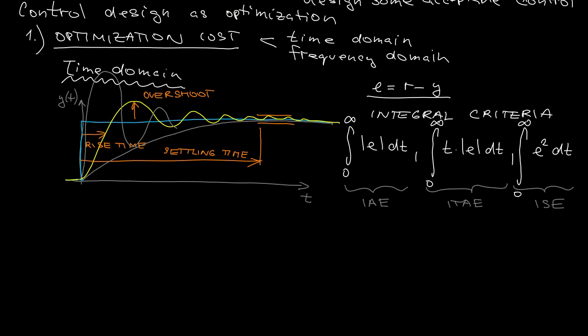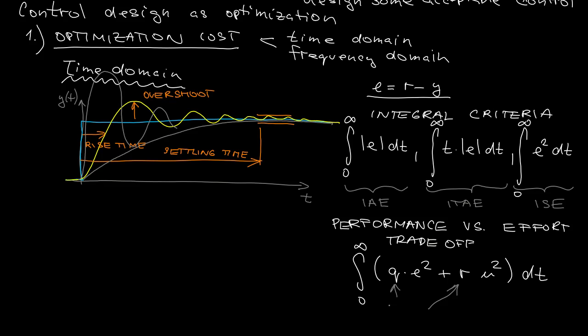You can include control aspects in constraints, or include them directly in the optimization criterion, thus realizing the trade-off between performance and control effort. The most popular is the one you can see here, where Q and R are parameters which you use to express different preferences for the error in E and the control effort.